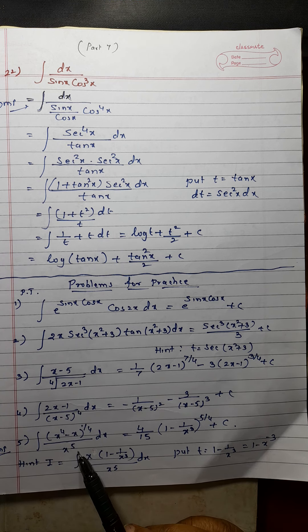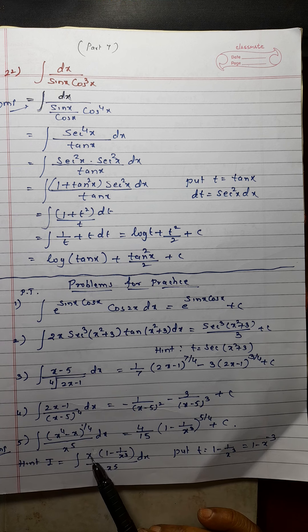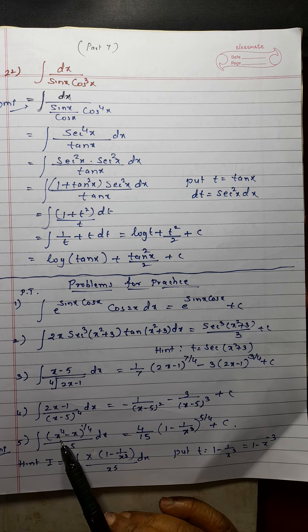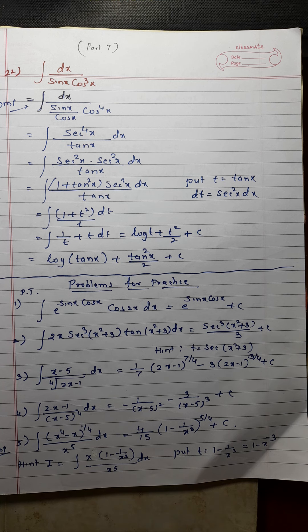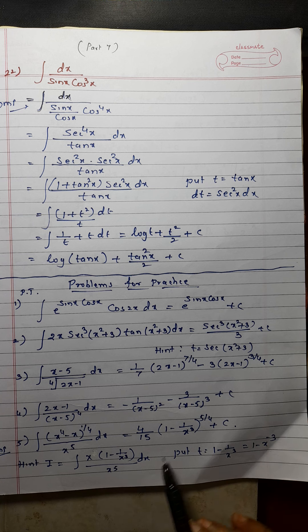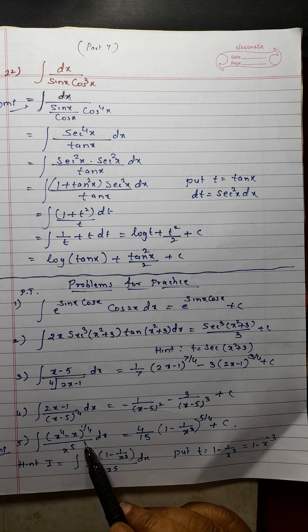You take x raised to 4 common from this. If you take x raised to 4 common, when it comes outside it will remain x, and here 1 will remain. And here 1 upon x cube will remain to adjust the terms, because x raised to 4 into 1 upon x cube becomes x. Now this term cancels with this, it will become x raised to 4. Now substitute 1 minus 1 upon x cube equal to t, which is the same as 1 minus x raised to minus 3. This answer is given — this is a very important problem, usually asked in the examination.